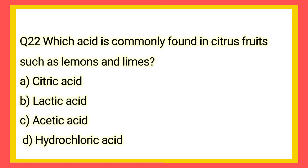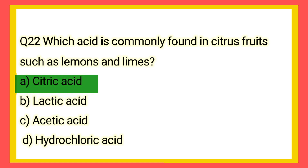Question 22: Which acid is commonly found in citrus foods such as lemon and limes? Citric acid. That option is the correct answer.